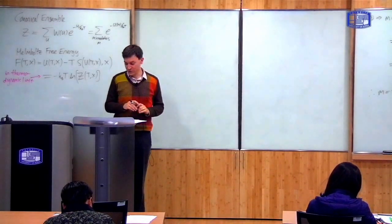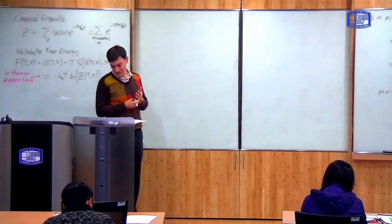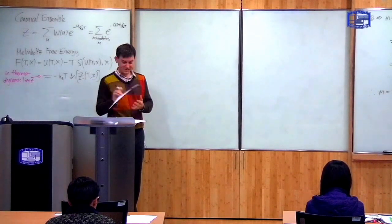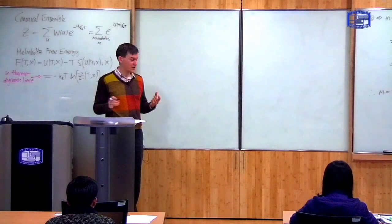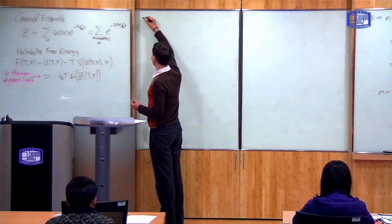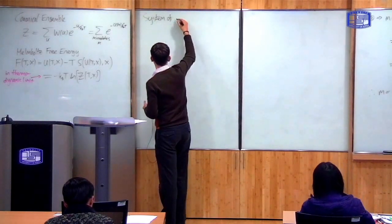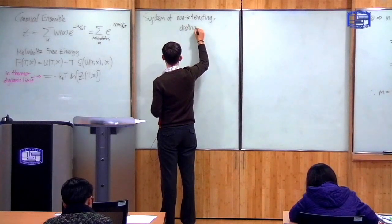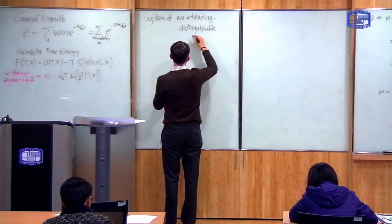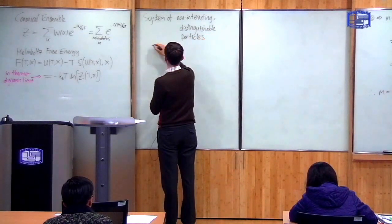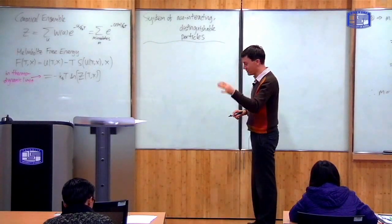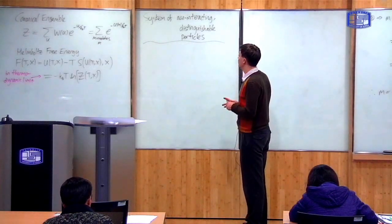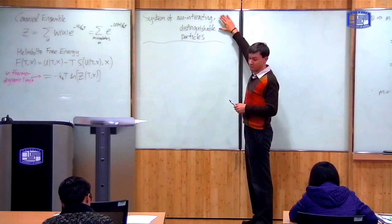All of these questions look at systems where the particles are non-interacting. In the case of non-interacting particles — and in fact they're all distinguishable non-interacting particles — the formula for the partition function greatly simplifies. These two words are important: non-interacting and distinguishable.